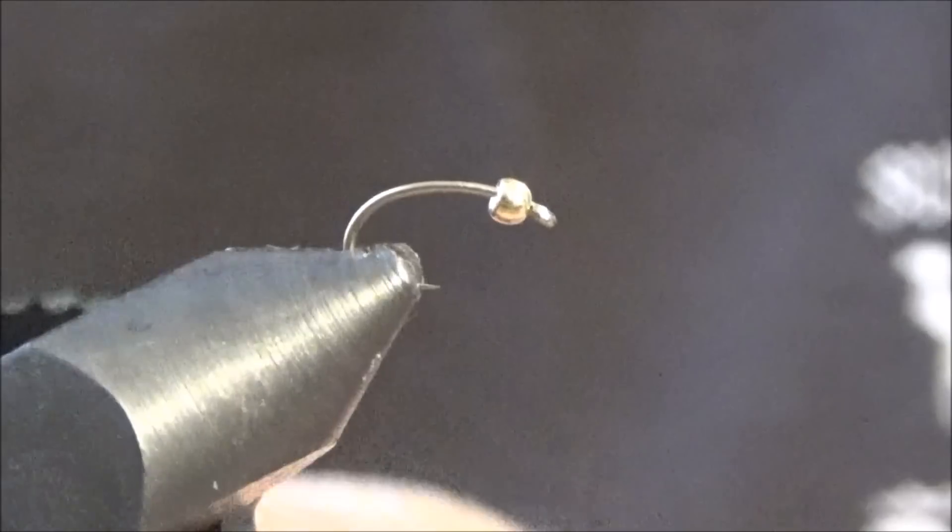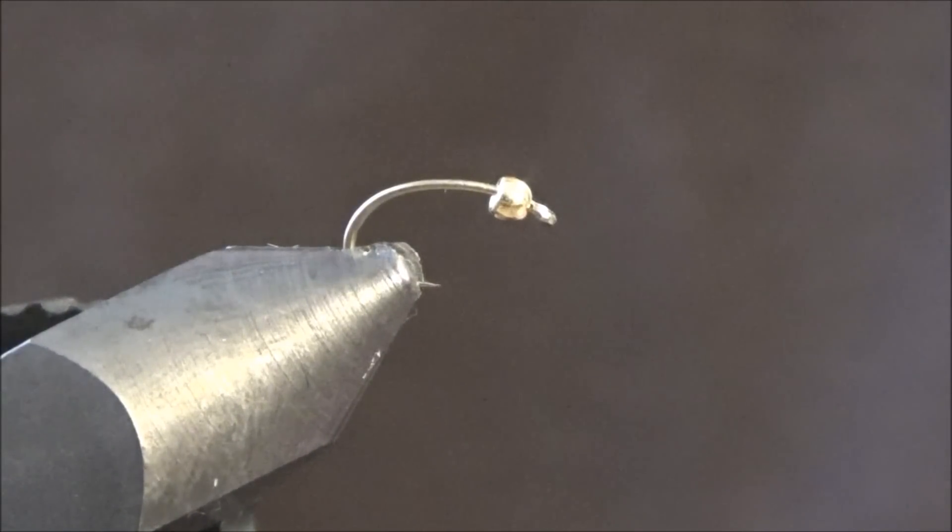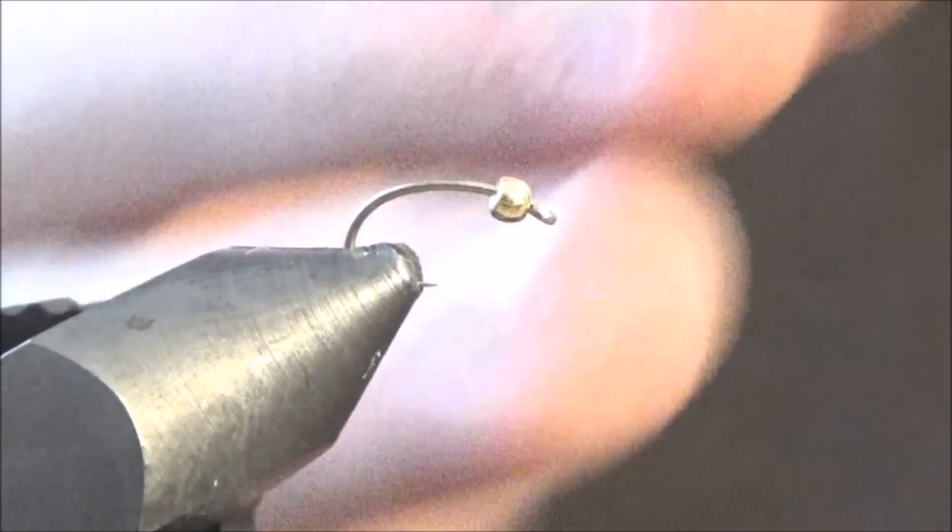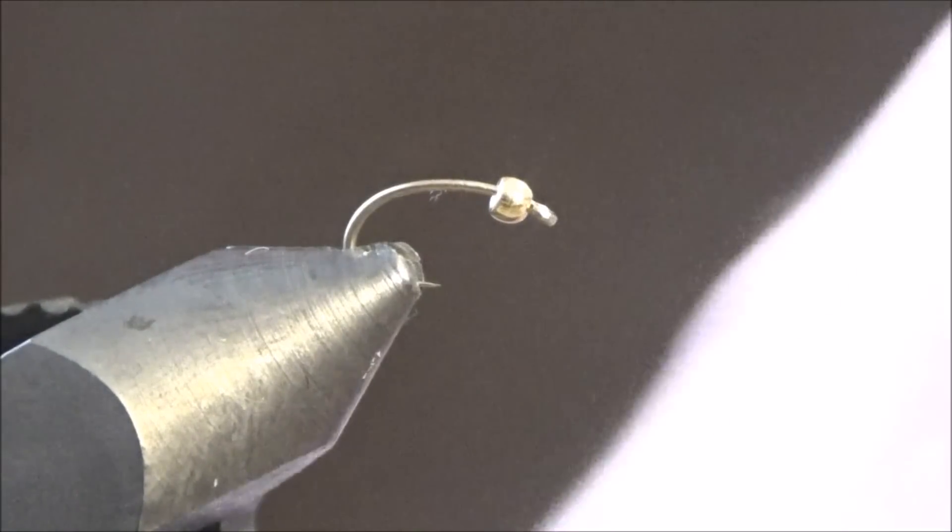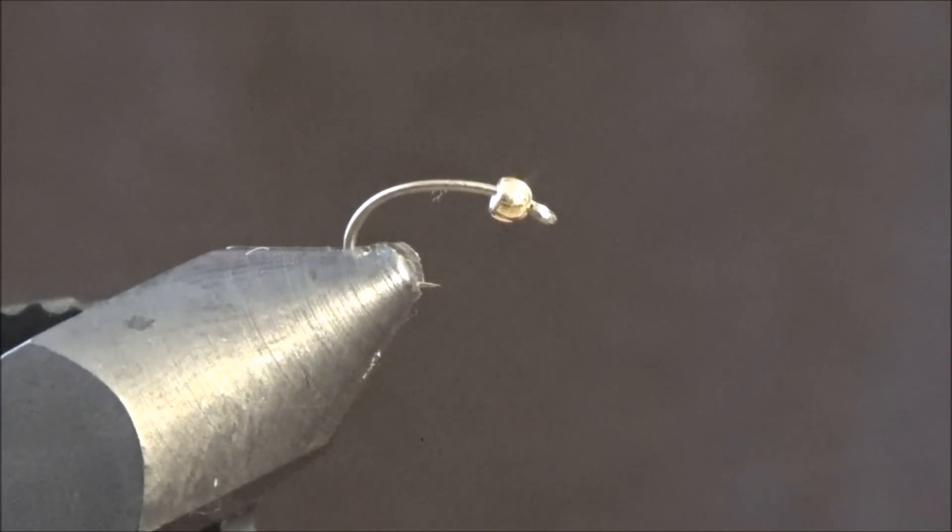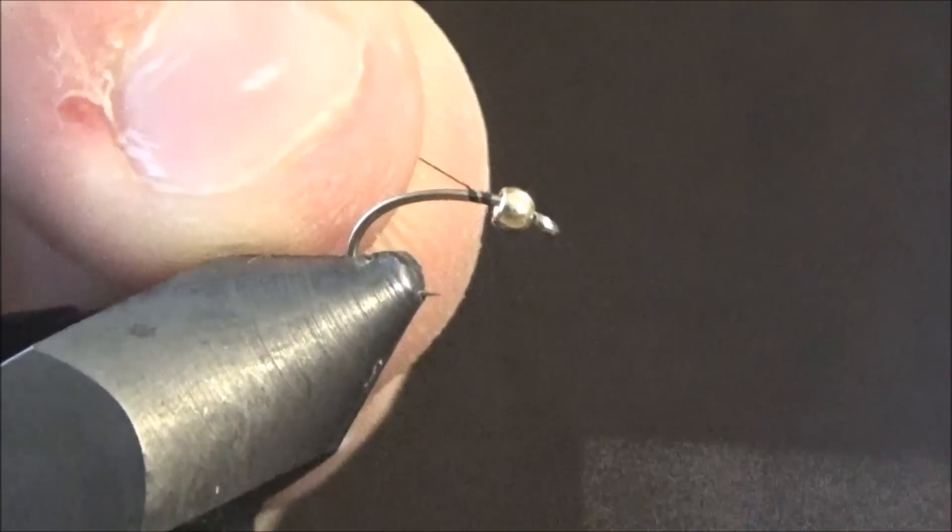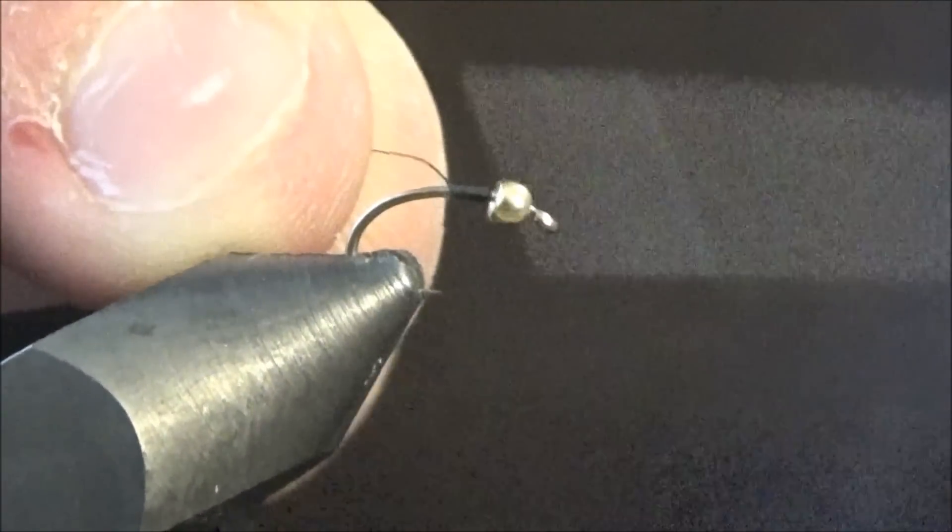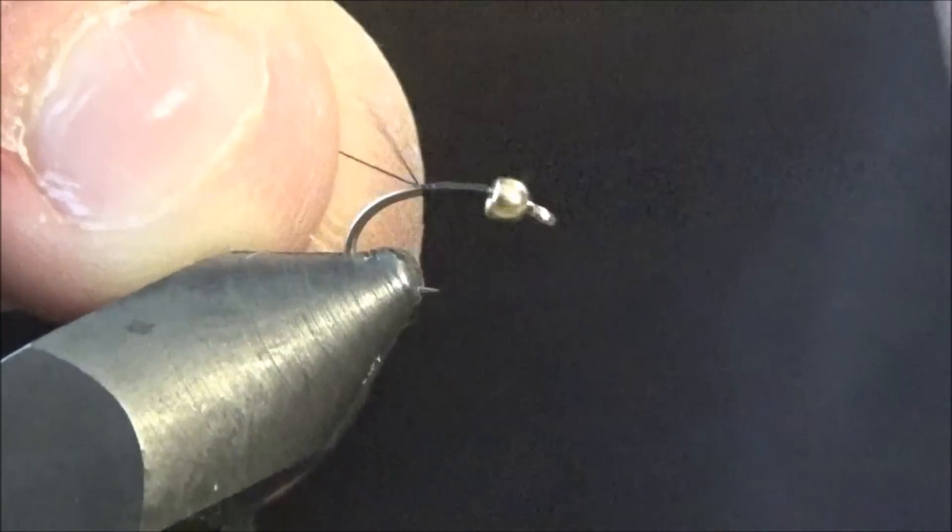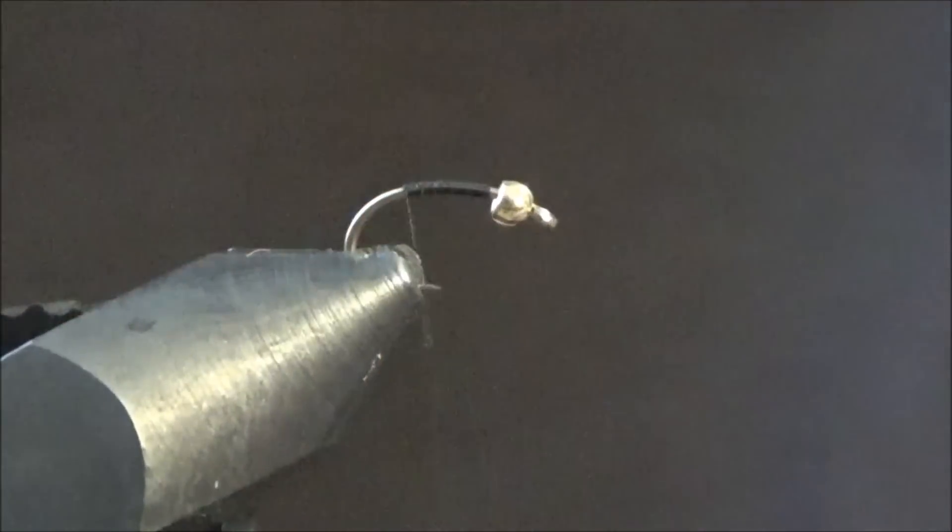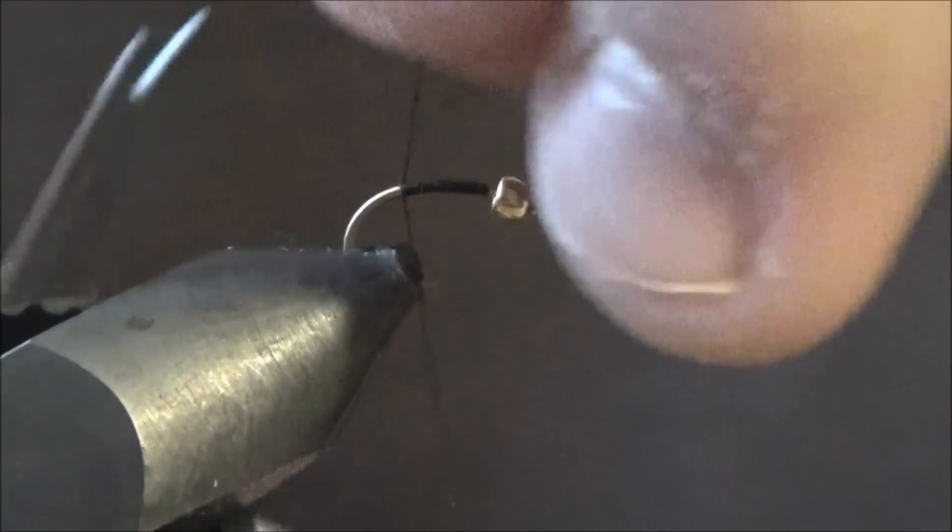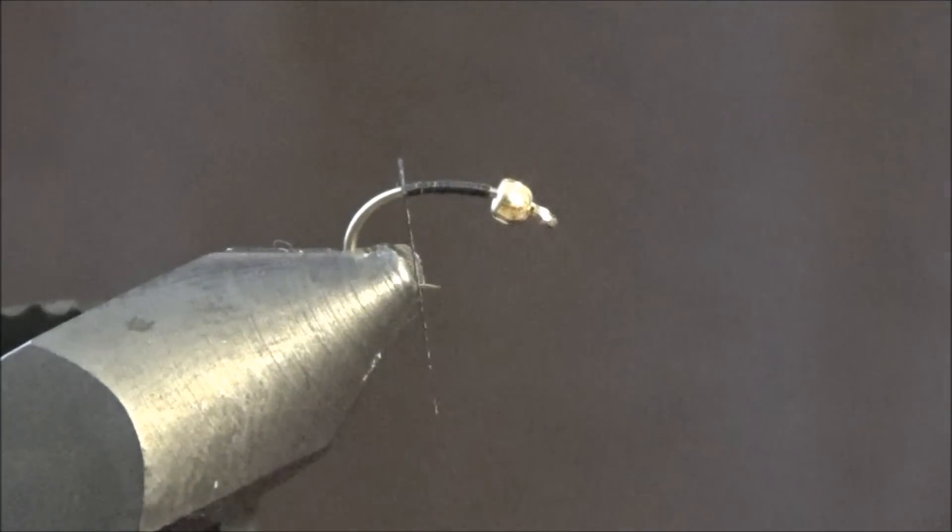Okay, you're going to start off by putting your Size 16 Daiichi Scud Pupa Hook. I like the Scud Pupa Hook, it gives a little bend to it, and I put a gold bead on, it could be any color bead you want. I'm just going to start with our black thread. I typically use green but I ran out of green, so I'm just going to be using black. Take that back and cut it off.